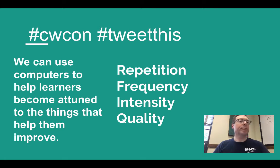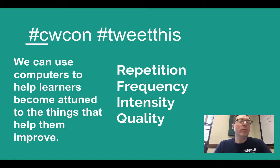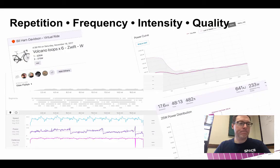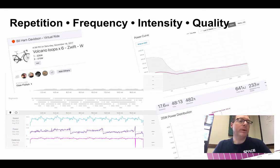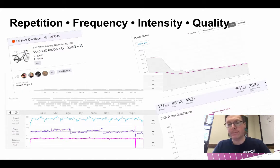We live in amazing times. In many different areas of our lives we can use these technologies to track our activity, to see our practice, to make changes, and to improve. There are four key things we can become attuned to that work across many different areas of practice: repetition, frequency, intensity, and quality. Here are some examples of the way I use my bike — a smart trainer equipped with a Bluetooth transmitter, a power meter, my computer, and two web services: one called Zwift, which is a virtual world for riding and running, and one called Strava, which is a site that lets me record, upload, analyze, and share workout details.